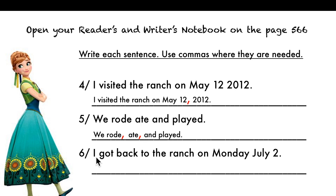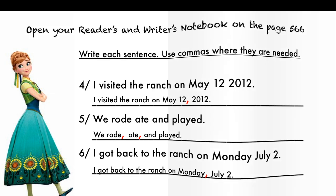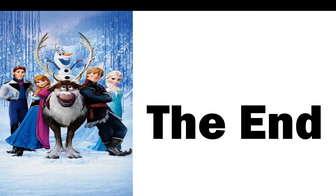And the last one: 'I got back to the ranch on Monday, July 2.' We have a date with a day of the week. The comma comes between Monday and July — between the day and the month. That's it. I hope this lesson was not too difficult. Bye for now, that's the end. Have a good day!